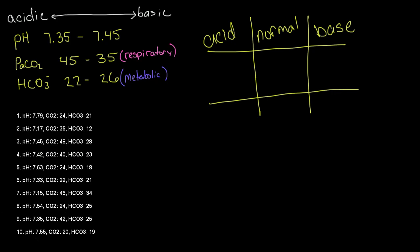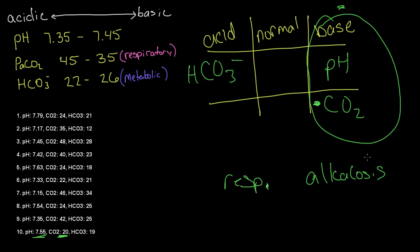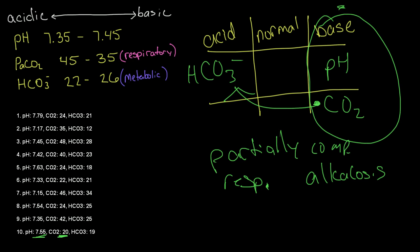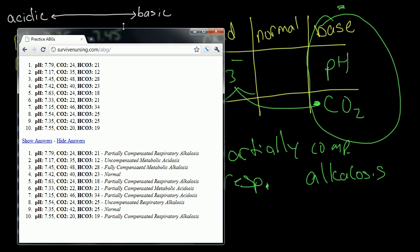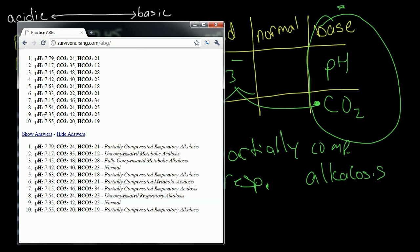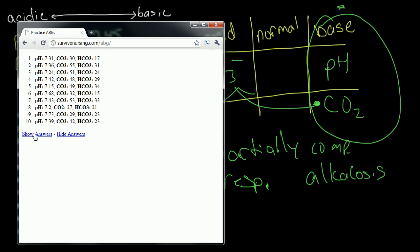Number ten: pH of 7.55 — this is basic. CO2 of 20 — this is also basic. And an HCO3 of 19, which is acidic. Our tic-tac-toe is in the basic column — alkalosis. The parameter used to make it up is CO2, which is a respiratory value — respiratory alkalosis. And our opposite parameter is partially compensating. So partially compensated respiratory alkalosis. Let's double-check — correct. This website is a really great resource. You can hide or show the answers, and if you need more practice, simply refresh the page and you have 10 new problems to solve.